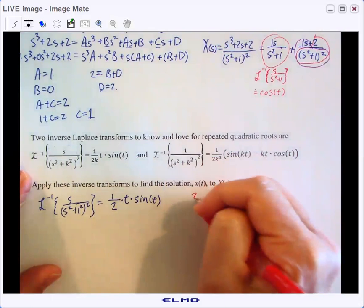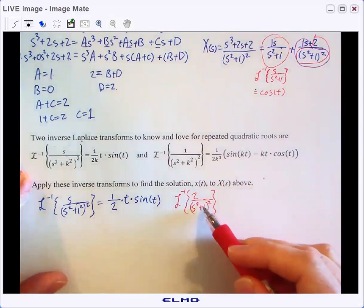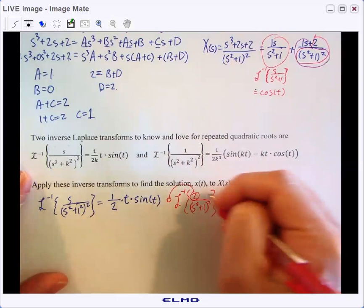And lastly, we also have two over S squared plus one quantity squared. And if we do the inverse Laplace transform for that, we notice that he looks identical to this, except we can factor the two out front so that we now have our one.